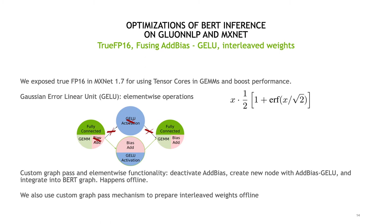In MXNet 1.7, we added the option to compute the matrix multiplications completely in FP16. Before, it was possible to use FP16 for input and output data types, but the internal accumulation was happening in FP32. Now everything can happen in FP16, and this forces the use of tensor cores and therefore boosts performance.